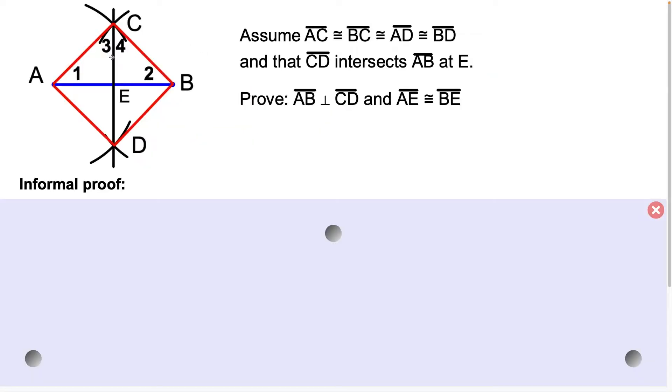So now let's talk about why does this technique work. Well, when we did the construction, we set the compass at A and we swung the arc above and below, and then we repeated this process from B, swinging it above and below.